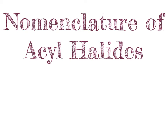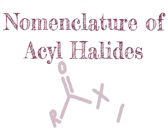In this video, we continue discussing carboxylic acid derivatives by looking at the nomenclature of acyl halides. An acyl halide is a molecule that has a carbonyl group directly bonded to an R group and also bonded to a halogen atom, which we refer to as X. The carbonyl group plus the R group directly bonded to it is referred to as the acyl group.